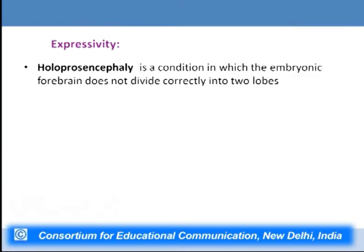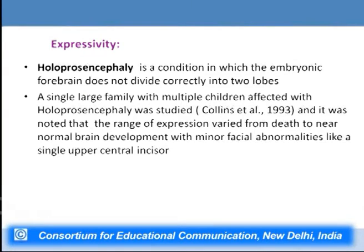Another example is holoprosencephaly, a condition in which the embryonic forebrain does not divide correctly into two lobes. A single large family with multiple affected children was studied by Collins et al. in 1993. The range of expression varied from death of the individual to near-normal brain development with only minor facial abnormalities like a single upper central incisor — a perfect example of variable expressivity.